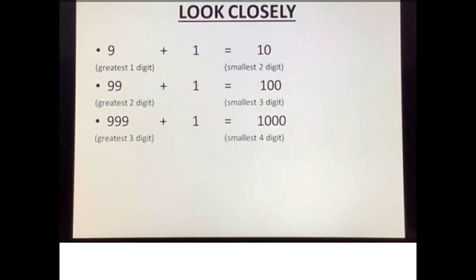99 is the greatest two digit number. If we add 1 to it, it becomes 100. 100 is the smallest three digit number. 999 is the greatest three digit number. If we add 1 to it, it becomes 1000. 1000 is the smallest four digit number.